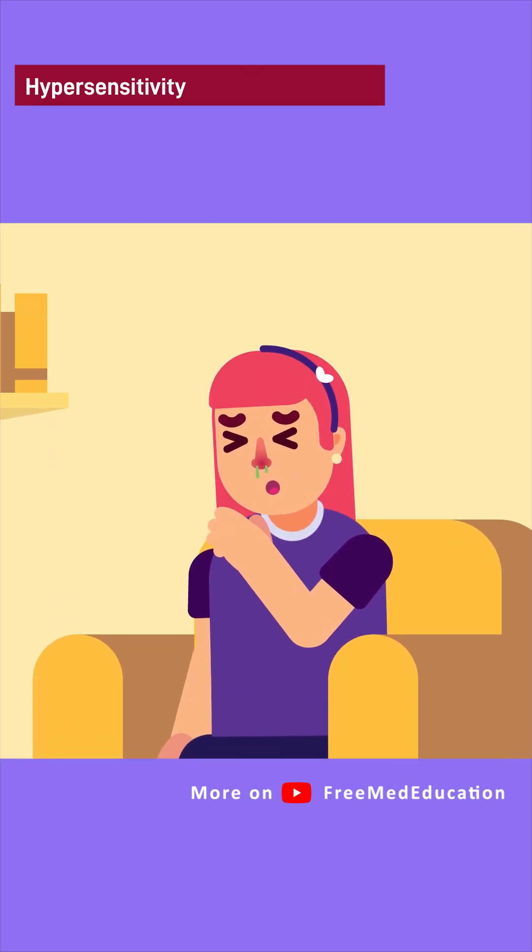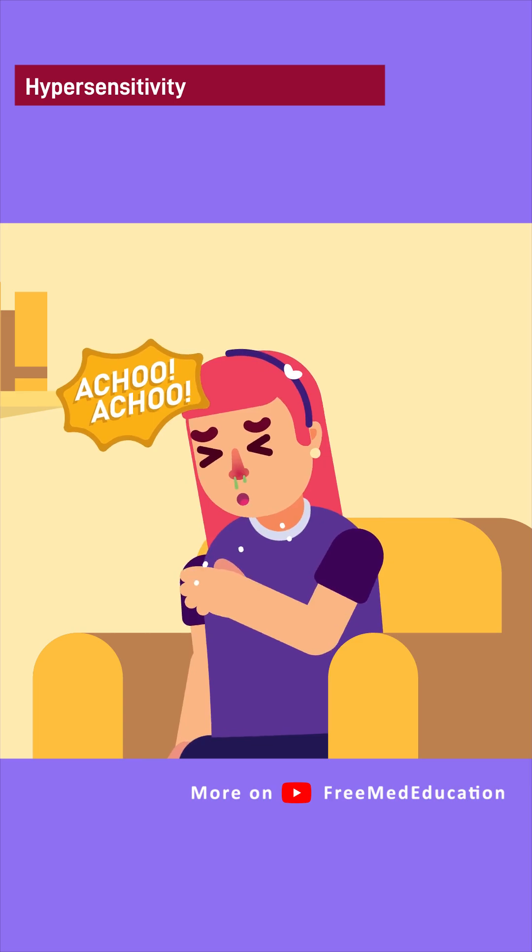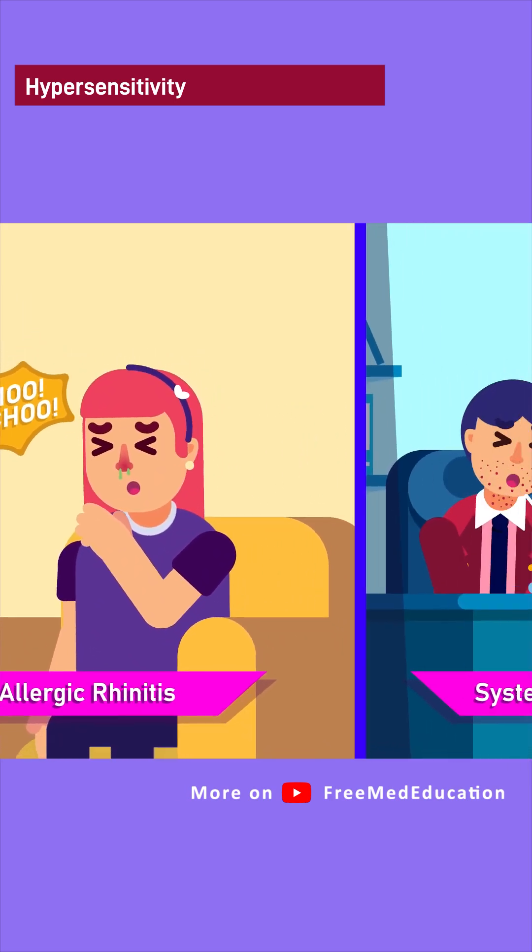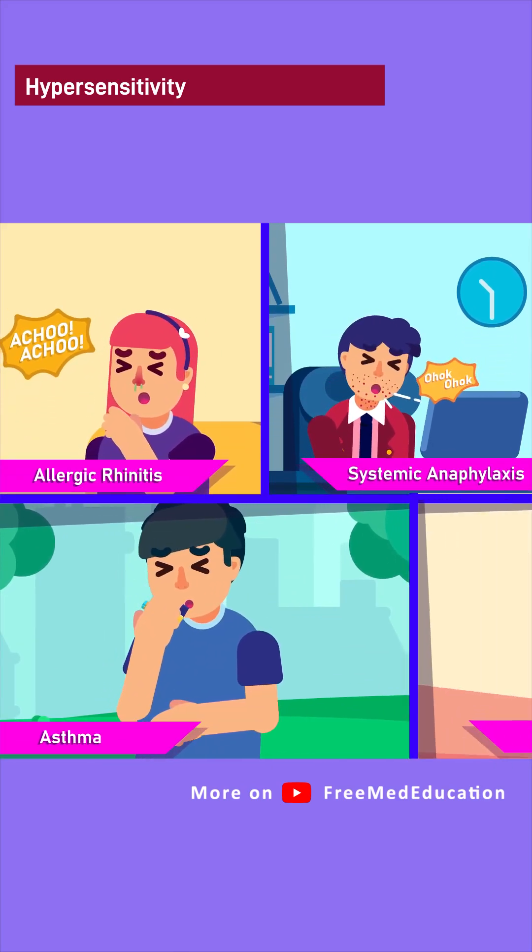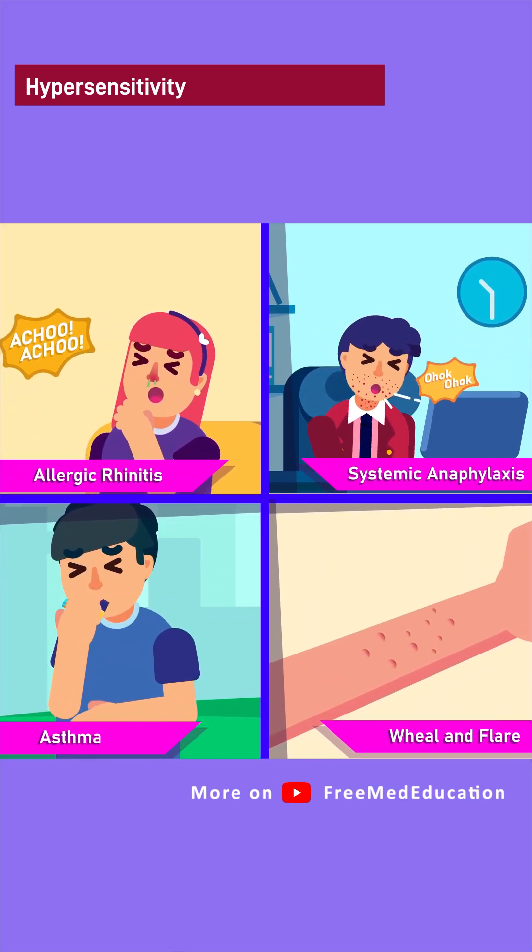Type 1 hypersensitivity examples are: 1. Allergic rhinitis, 2. Systemic anaphylaxis, 3. Asthma, 4. Wheal and Flare.